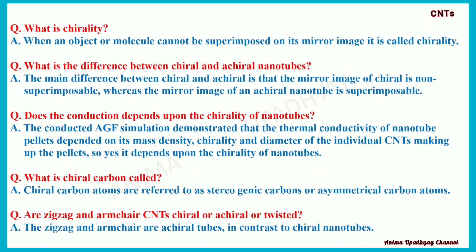What is chirality? When an object or molecule cannot be superimposed on its mirror image, it is called chirality. What is the difference between chiral and achiral nanotubes? The mirror image of a chiral nanotube is non-superimposable, whereas the mirror image of an achiral nanotube is superimposable. Does conduction depend upon chirality? Yes — the thermal conductivity of nanotube pallets depends on mass density, chirality, and diameter of the individual carbon nanotubes.